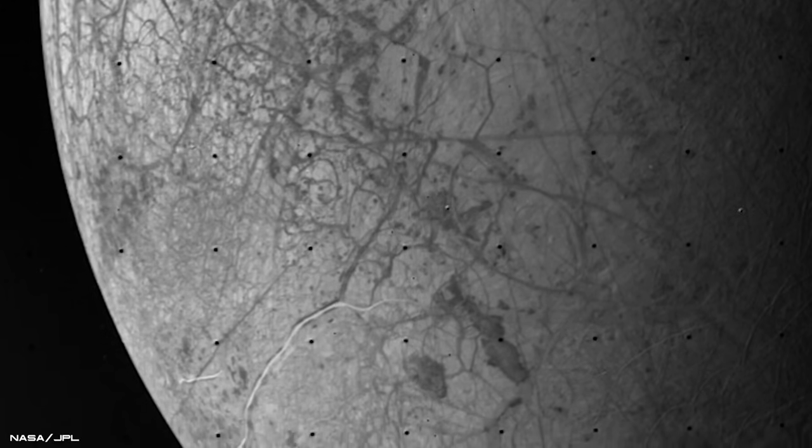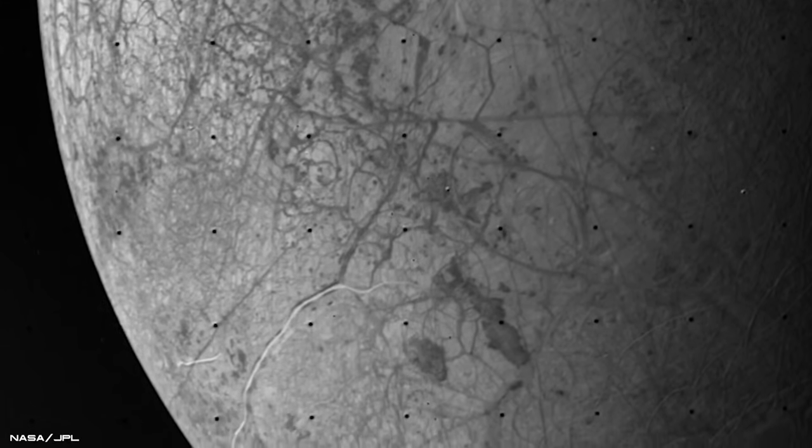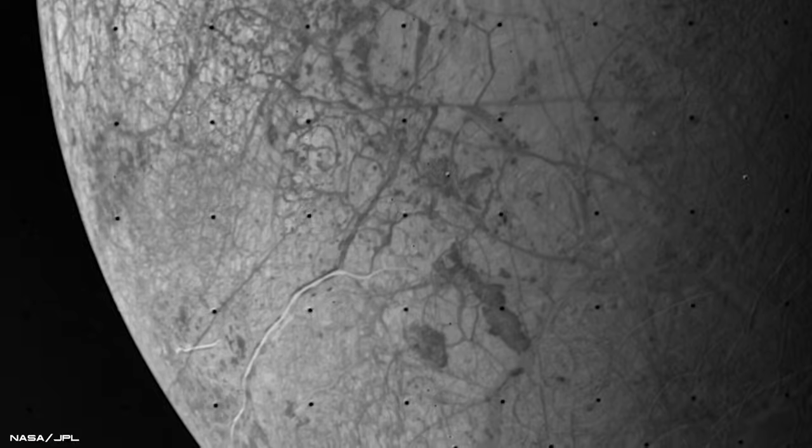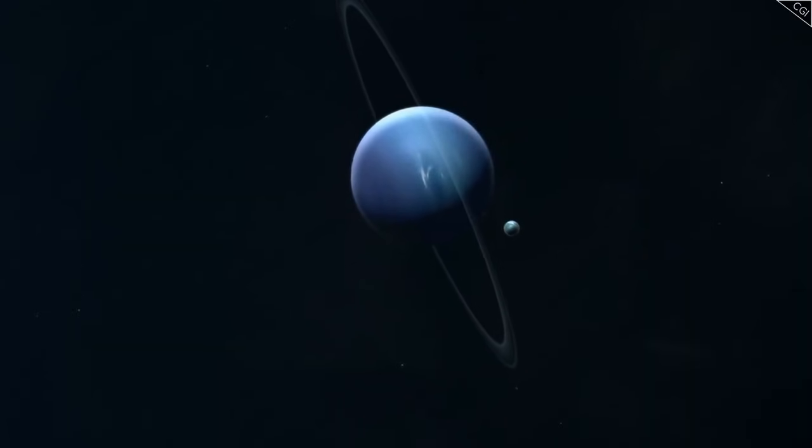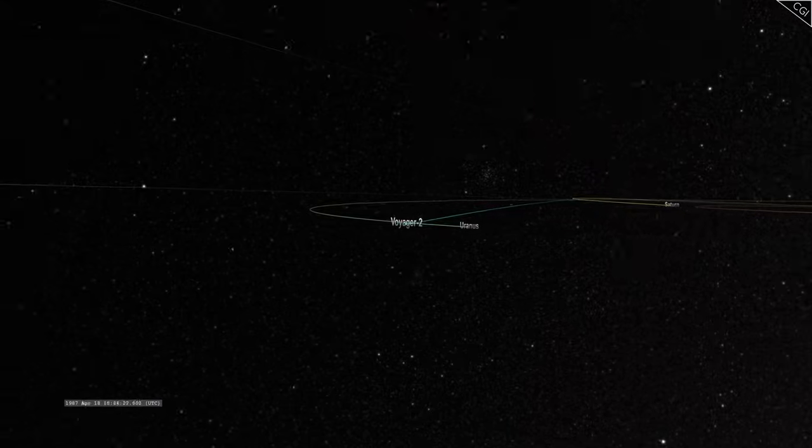As of January 2024, Voyager 1 is approximately 14.9 billion miles, 158 times Earth's distance from the Sun, from our planet, making it the farthest human-made object in space.